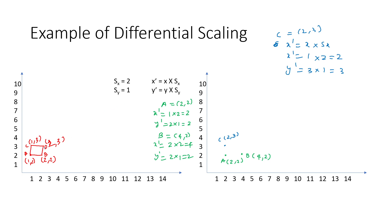For point D at (2,3): X'=2×Sx=2×2=4, and Y'=3×Sy=3×1=3. So D'=(4,3). Once we plot all four vertices and connect them, what was a square has become a rectangle. This is how we use differential scaling to draw pictures from basic shapes like squares or circles.